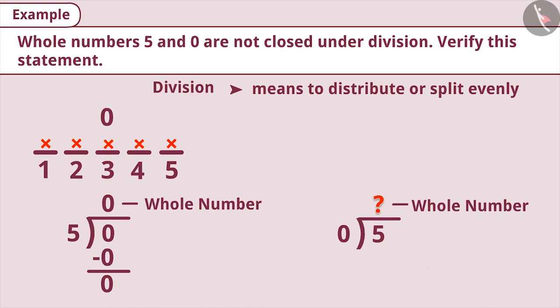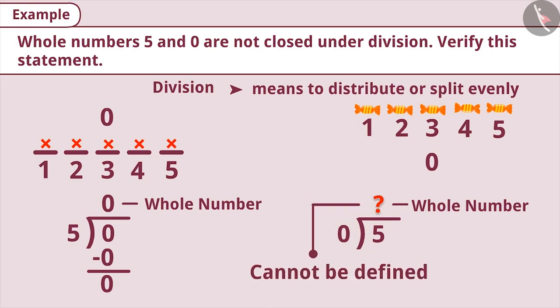If you have 5 chocolates, which you have to distribute equally among your 0 friends, then you will never be able to share them. That is, you will never get the result of division of 5 by 0. Therefore, 5 divided by 0 is not defined. That is, the result of 5 divided by 0 cannot be called a whole number. Therefore, whole numbers 5 and 0 are not closed under division.